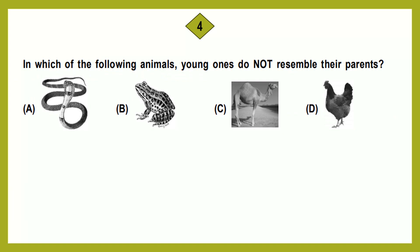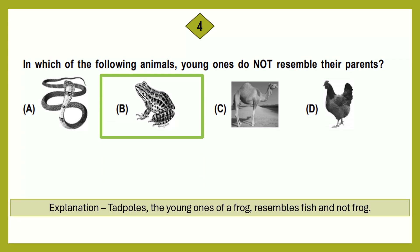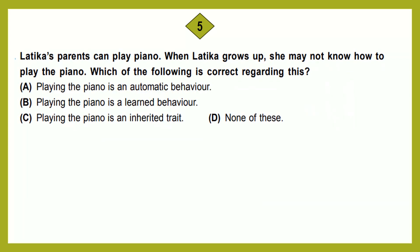Question number 4: In which of the following animals do young ones not resemble their parents? Option A: snake. Option B: frog. Option C: camel. Option D: hen. The correct answer is option B. Tadpoles, the young ones of a frog, resemble fish and not a frog.